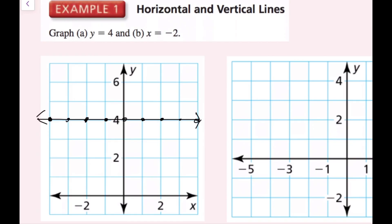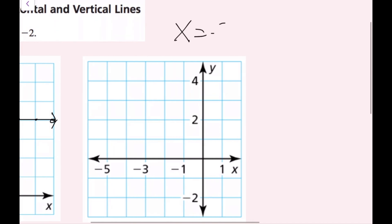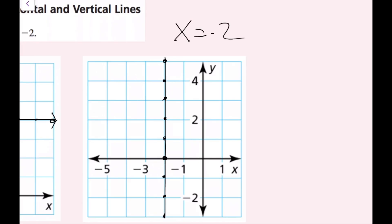For the second part, I'm going to graph x equals negative 2. In this case, we're going to have a vertical line because I have an x value by itself equal to a constant. All my x values are going to equal negative 2 — it doesn't matter what y is. I find negative 2 on the graph and draw my points. I recommend doing the top point and the bottom point, because the farther apart your points, the more accurate your line will be. Then take your straight edge, draw your line through, and include your arrows.